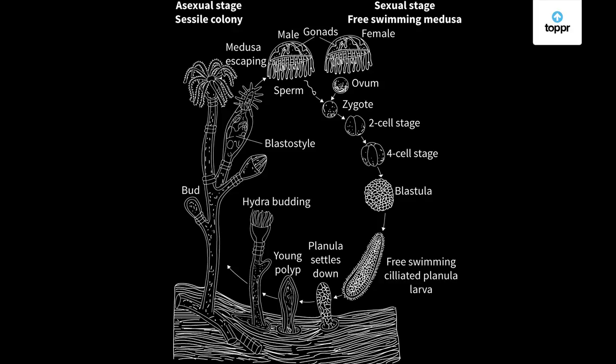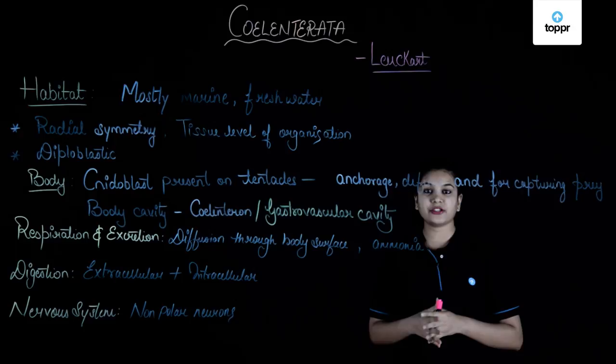To summarize: medusa forms male and female gametes; after fertilization they give rise to planula larva; planula larva settles down to form a young polyp; the young polyp reproduces asexually by budding to form medusa. Formation of medusa by polyp is asexual, but formation of polyp by medusa is sexual. This covers the reproductive stages in coelenterates.